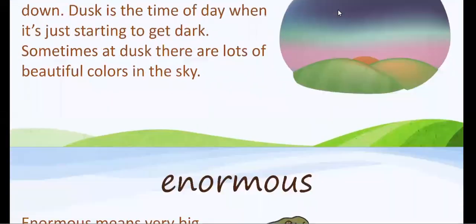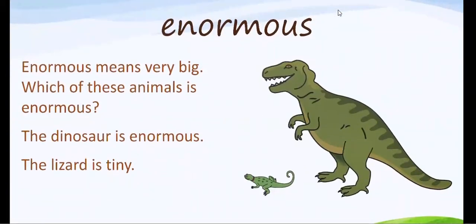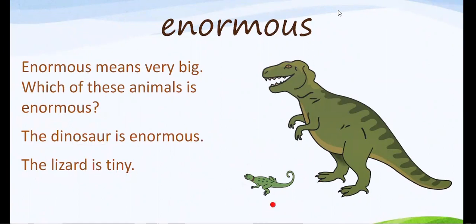Our next word is the word enormous. Enormous means very big. Which of these animals is enormous? The big dinosaur — he is enormous. And the little lizard is tiny. So enormous is a first grade word for big. Can we all say enormous together? Enormous.